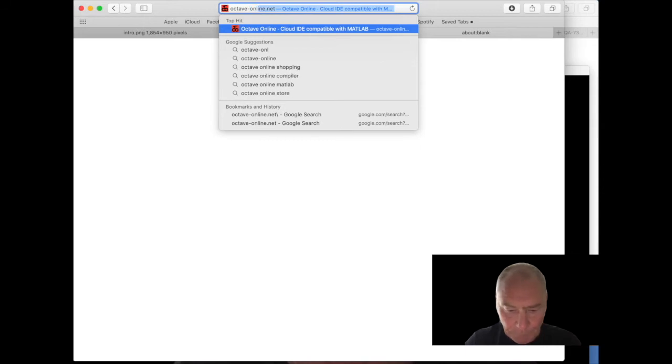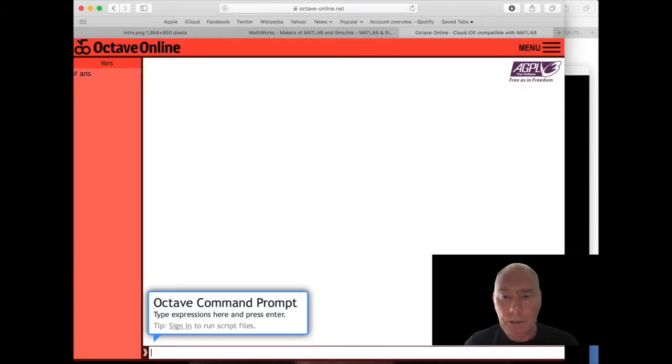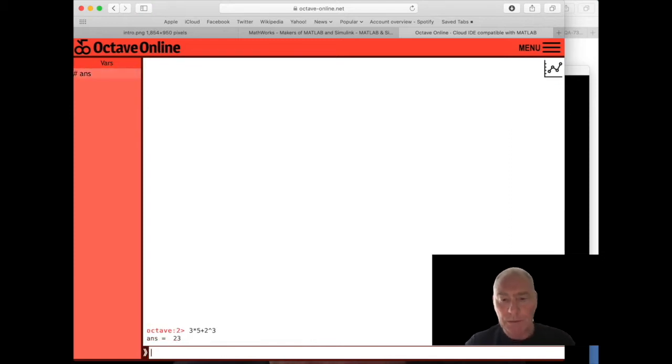So you can get at this. All you have to do is type Octave-online.net into your web browser and this pops up. And this allows you to do mathematics on a computer. So let's start simple. We can do things like this. We just type in the bottom, hit return and out comes the answer. 23. 3 times 5 is 15, 2 cubed is 8, 15 and 8 is 23. Okay, no big deal. Of course we can all do that in our heads.